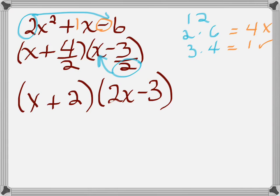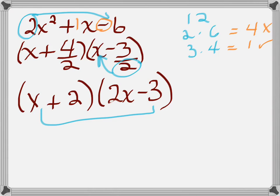We should check ourselves. x times 2x gives us the 2x squared. Then 2 times negative 3 gives us our constant term of negative 6. And if we take x times negative 3, we get negative 3x, and 2 times 2x is positive 4x. Combining those gives us positive 4x and negative 3x, which gives our middle term of positive x. So checking our work — it does indeed work.